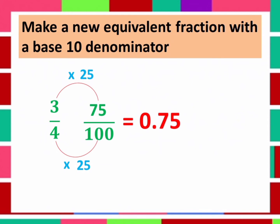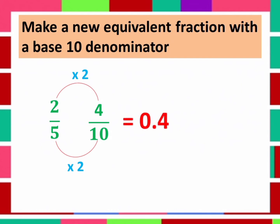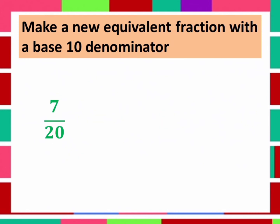Another one is 2 over 5. Multiply 5 by 2, so it will become 10. And 2 times 2 is equal to 4. Therefore, 2 over 5 is now 4 over 10. If we convert it to decimal, 4 over 10 will become 0.4.